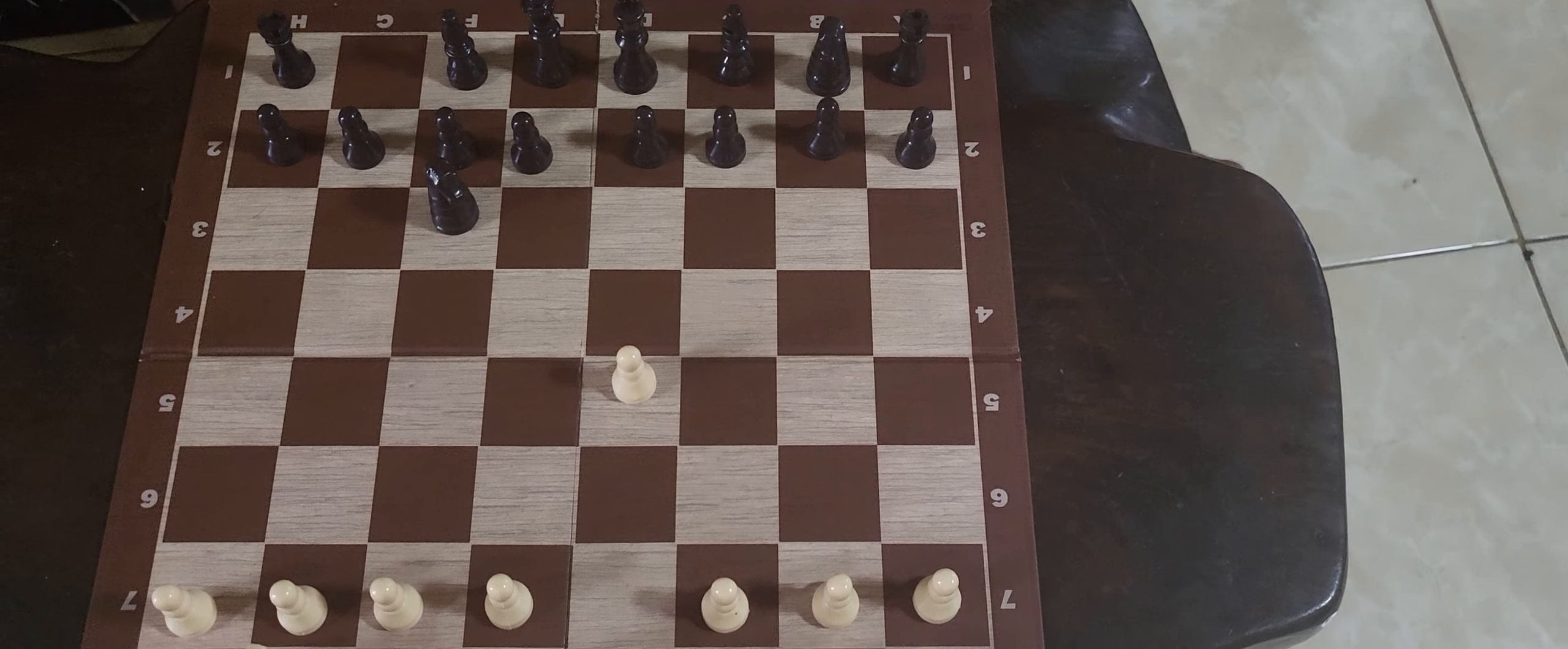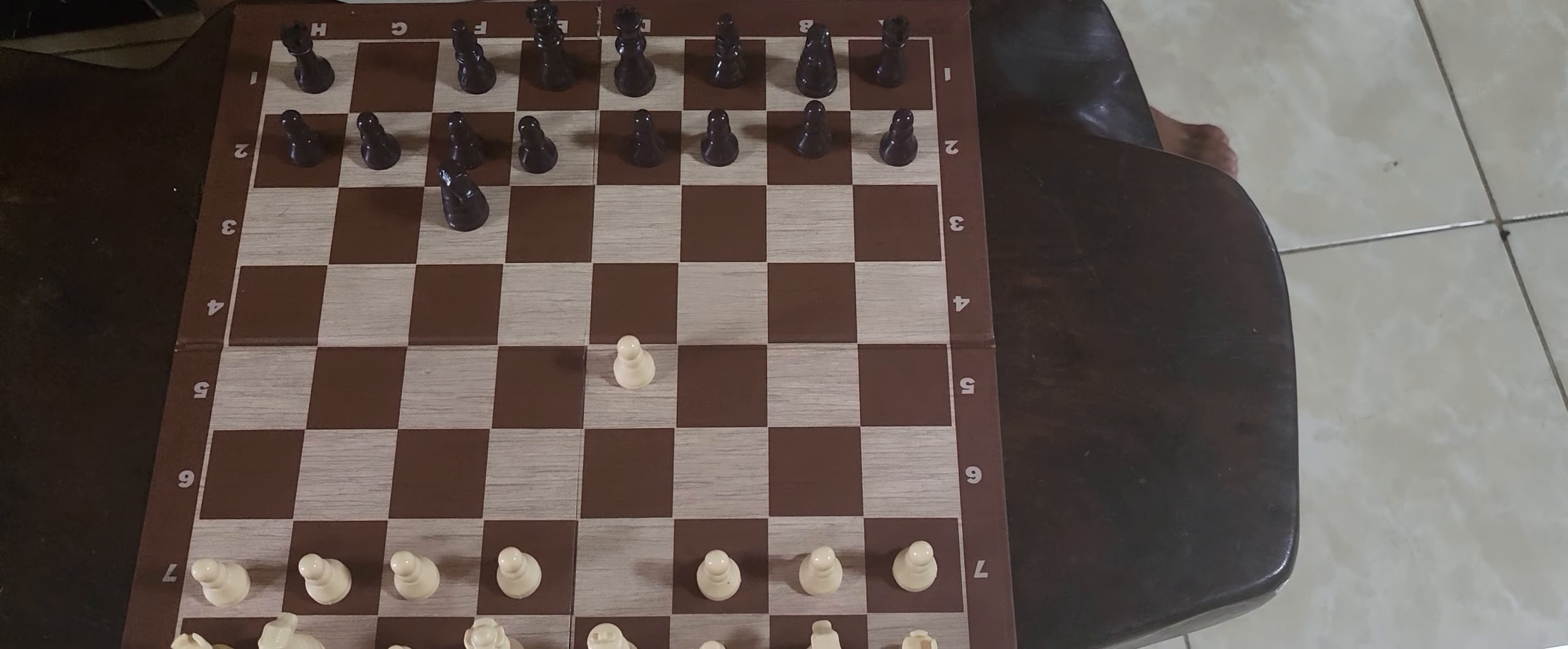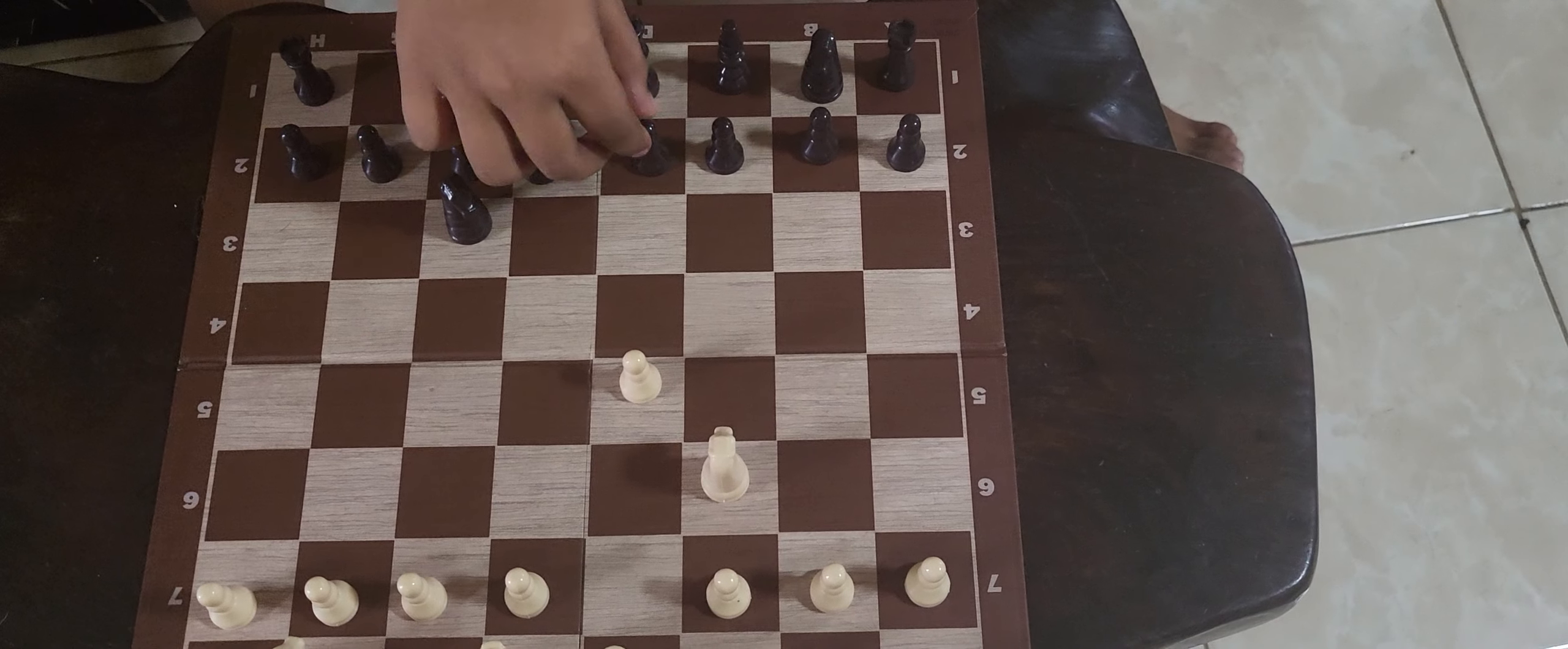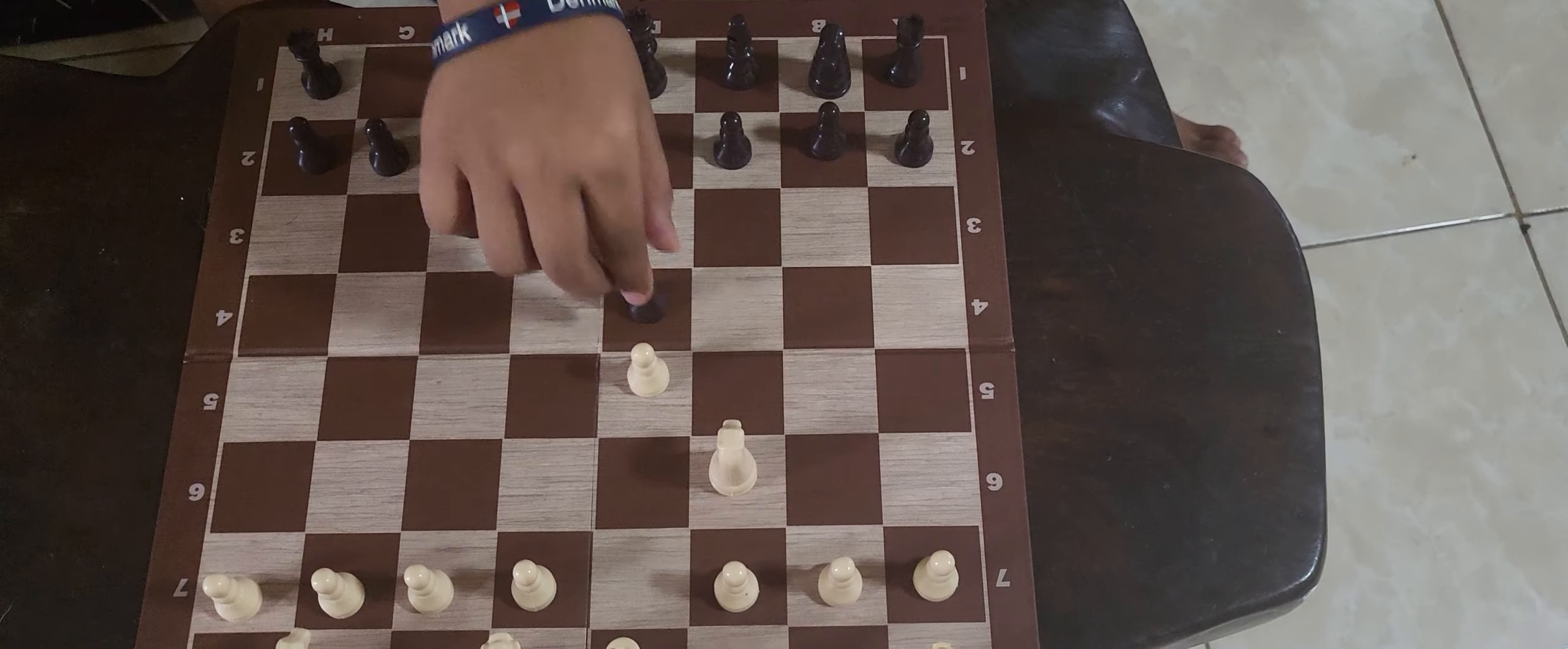Then they move their horse to b6. Then you move your pawn to d4.